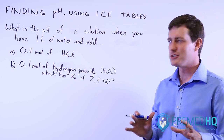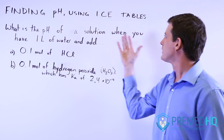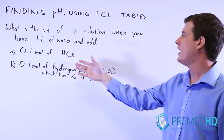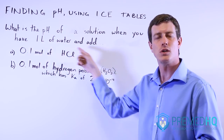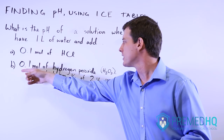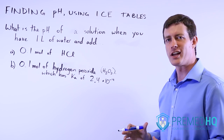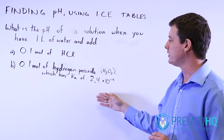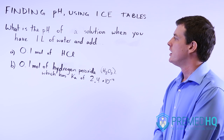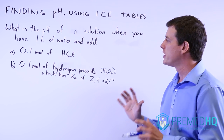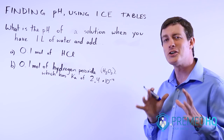Sometimes when working through chemistry problems you'll encounter one that asks for the pH of a solution when you add a known amount of a strong acid like HCl, or a weak acid like hydrogen peroxide with a given Ka value. In both cases you need to figure out how much hydrogen dissociates and connect that to the pH, and there are two different ways to do it.